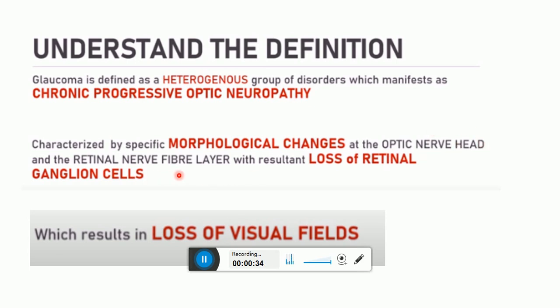There are changes in the retinal nerve fiber layer which leads to loss of retinal ganglion cells, which further leads to loss of visual fields. So the most important is the optic nerve head.